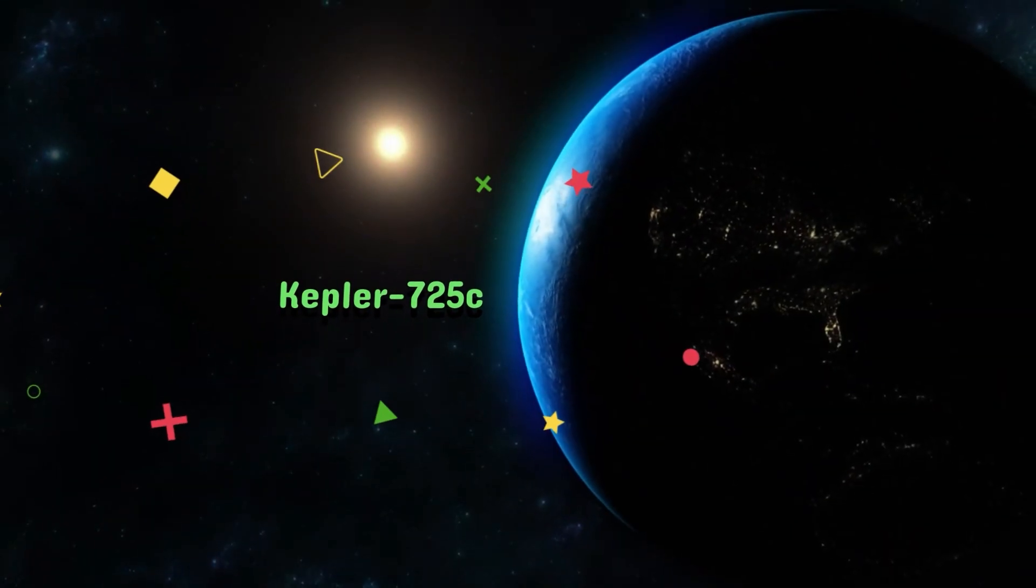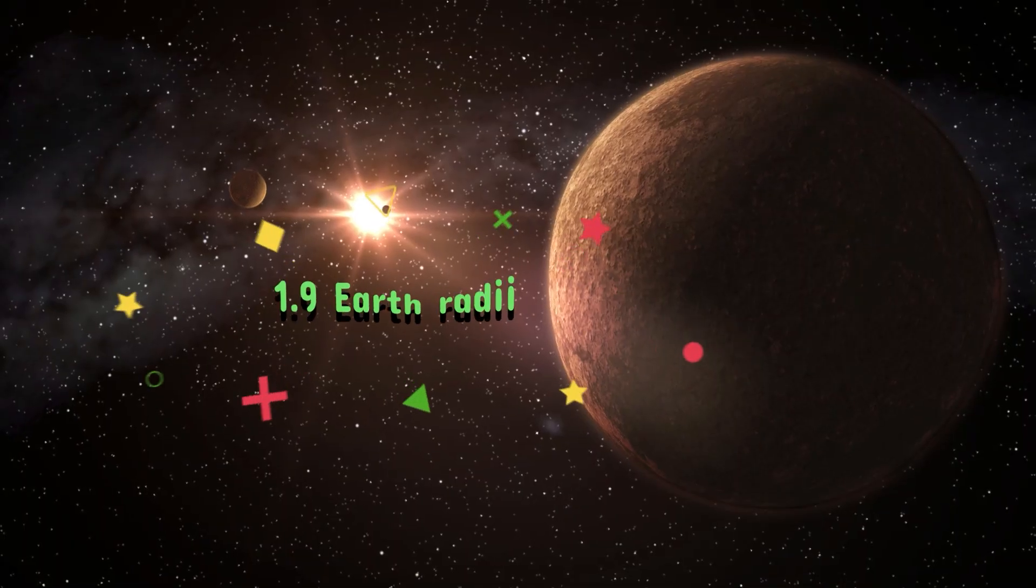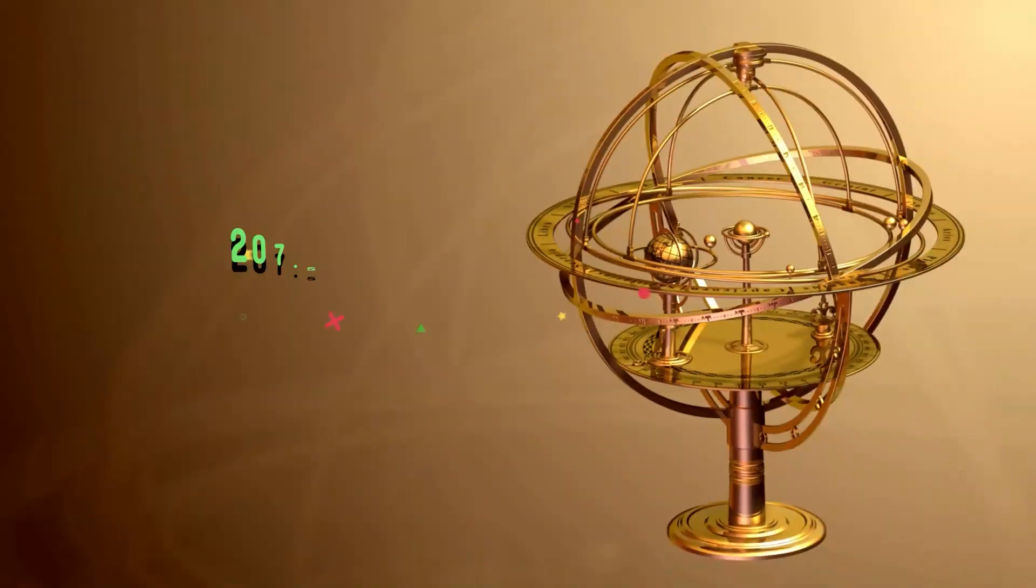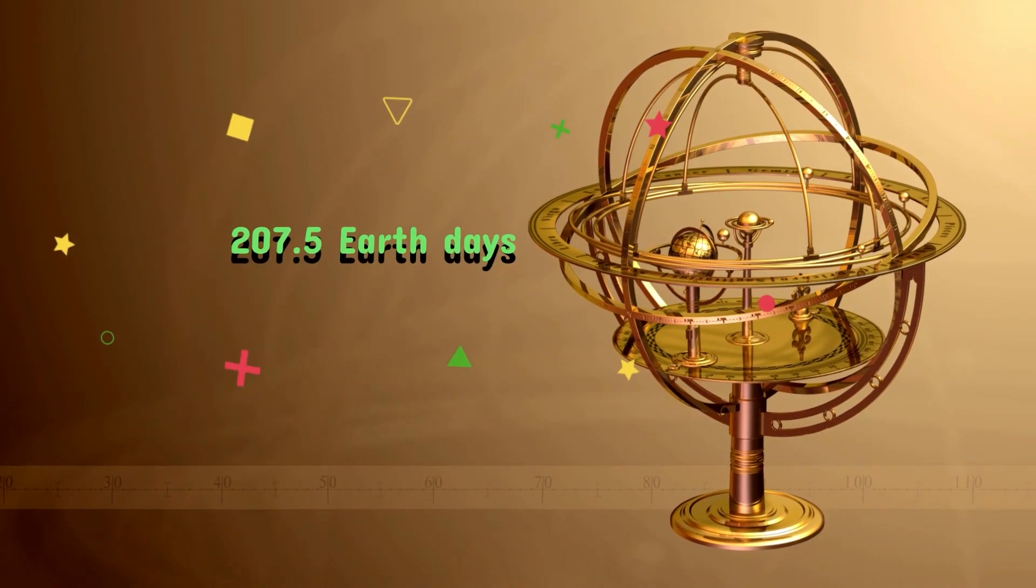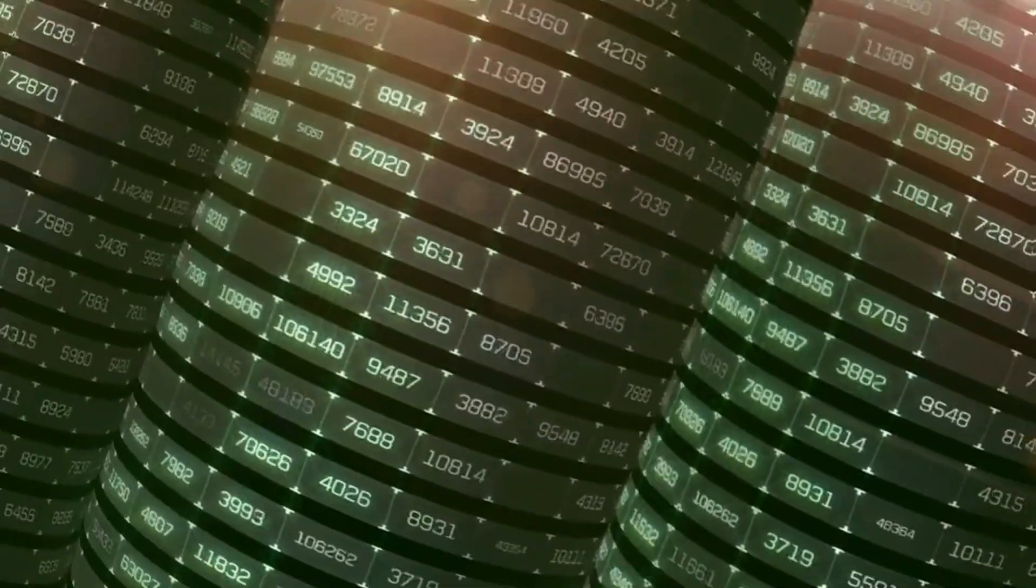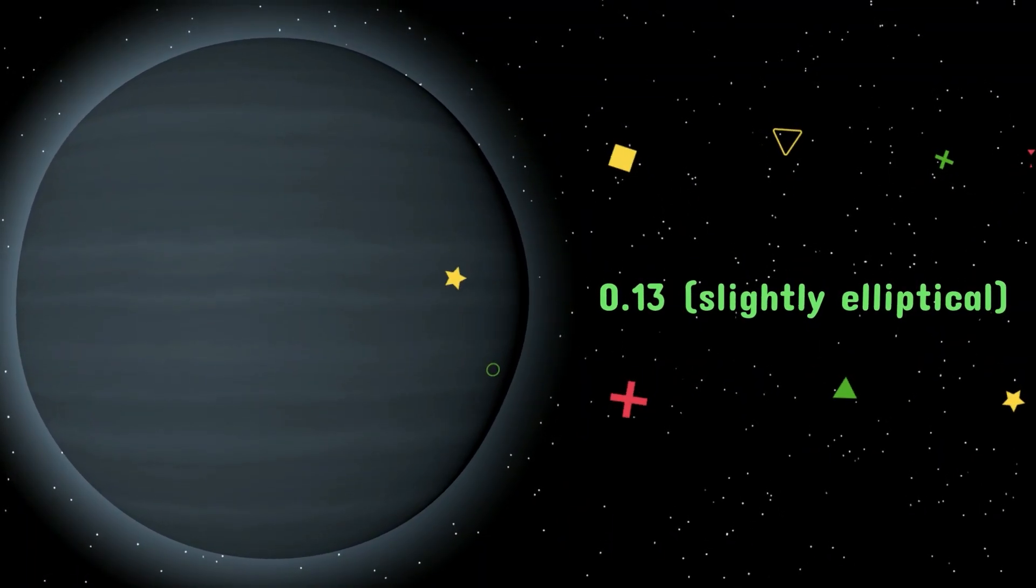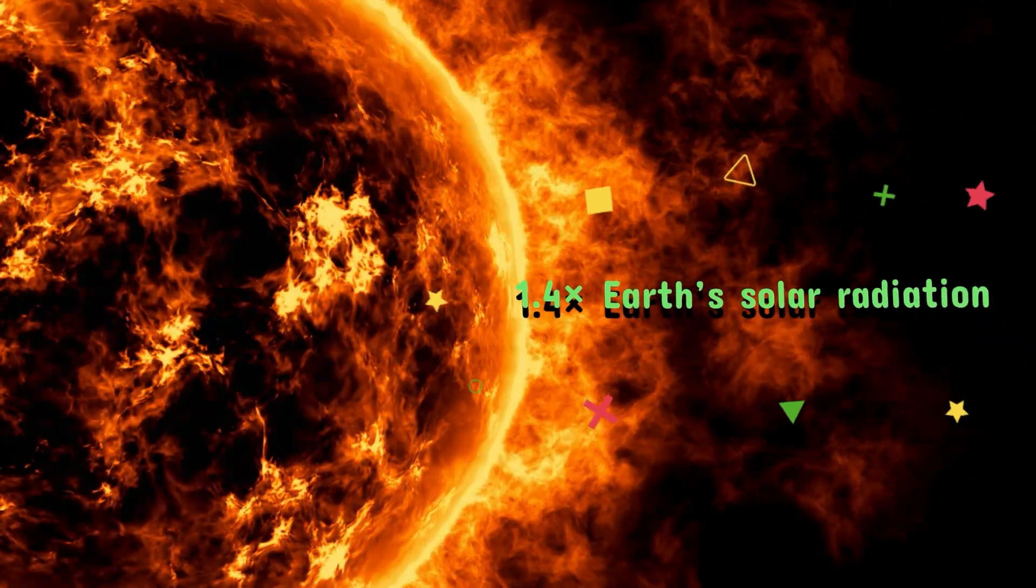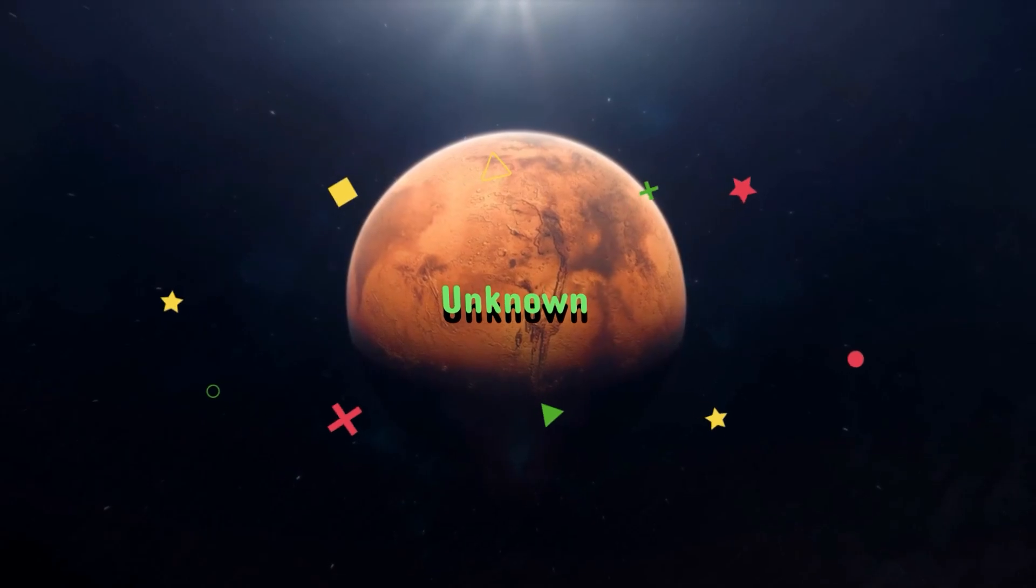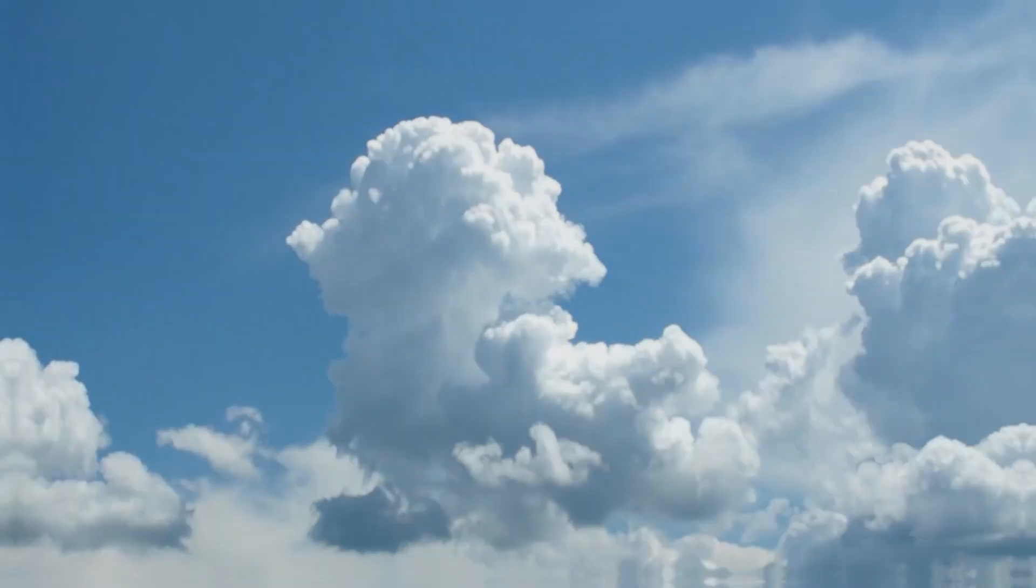Name Kepler-725c, type Super-Earth, radius 1.9 Earth radii, mass 9.7 Earth masses, orbital period 207.5 Earth days, distance from star 0.72 AU astronomical units, eccentricity 0.13 slightly elliptical, stellar flux received 1.4 times Earth's solar radiation, surface conditions unknown, atmosphere not yet confirmed.